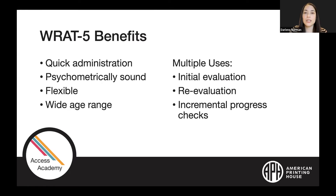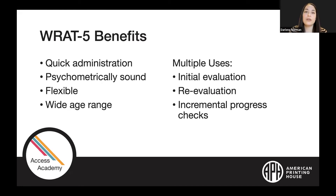For our older population — students in grades four through adulthood — you're going to spend about 30 to 40 minutes for general population administration, so approximately one hour to 90 minutes or more when implementing this tool for a person with visual impairment.